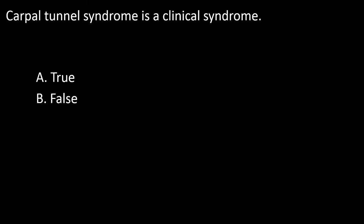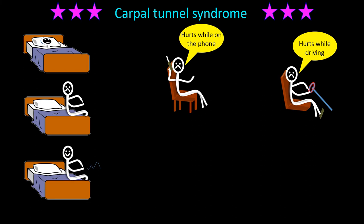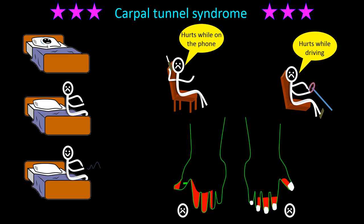Next question: carpal tunnel syndrome is a clinical syndrome. A: true, B: false. Carpal tunnel syndrome often presents with night hand pain that is relieved by shaking the hand. Pain later comes while holding the phone or driving. The pain in its purest form is restricted to the digital territory of the median nerve, sparing the territory innervated by the palmar cutaneous division of the median nerve, as well as those areas innervated by the ulnar and radial nerves. Yet at times the pain is poorly localized and even the forearm hurts.